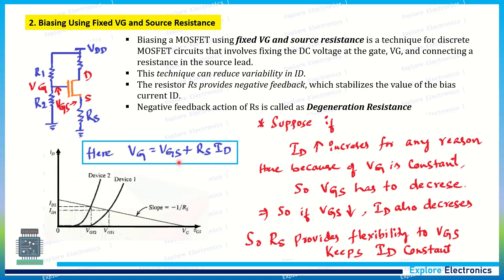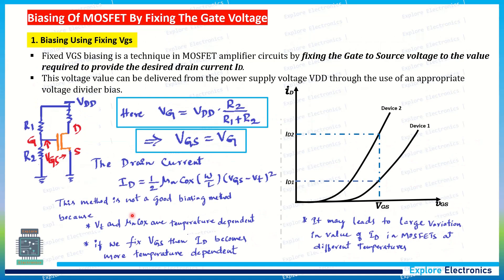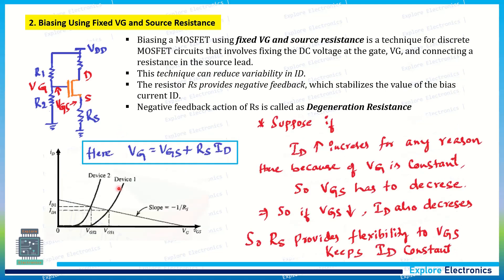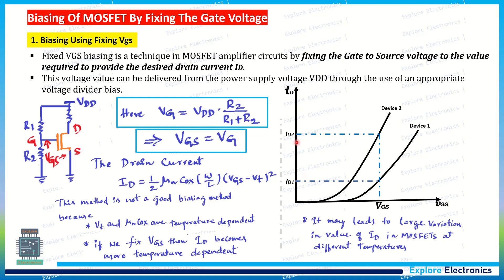You can see the ID versus VGS curve here also. Here also, the two devices with different temperatures with constant W by L, mu_N, COX, everything. But because of the temperature, the ID is varying here. And you can see the clear cut difference between the previous case as well as this case. Here, VGS is constant. But here, VG is constant. VGS is not constant. For the two devices, you can see there is a different VGS according to the variation in the physical parameters. And look at the variation in ID: ID2 and ID1 having less difference. But in the previous case, we have large difference in the ID1 and ID2.